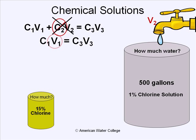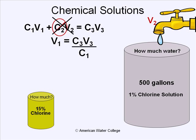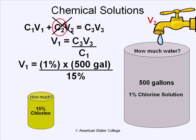We're looking for the volume of chlorine — how much chlorine we need to add. To solve for volume, we move the concentration to the opposite side. Now we're ready to plug in numbers: concentration times volume of solution 3 is the final concentration and volume, which is 1% times 500 gallons, divided by the 15% chlorine concentration.